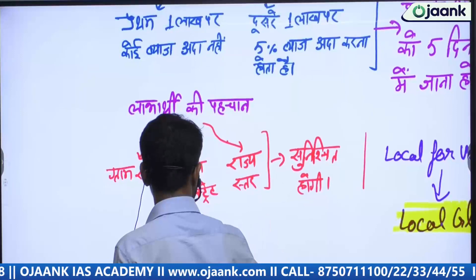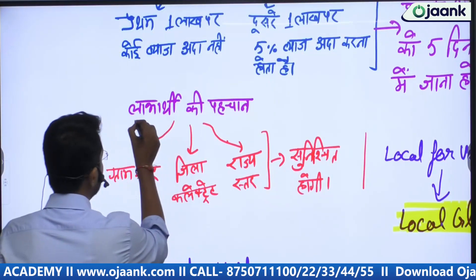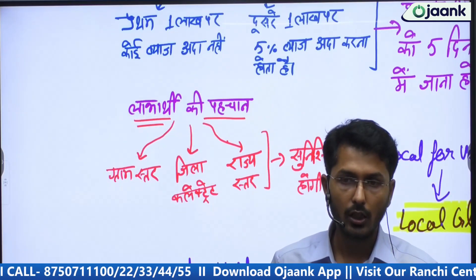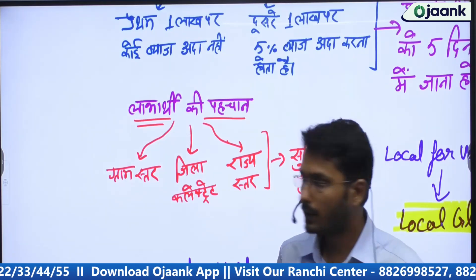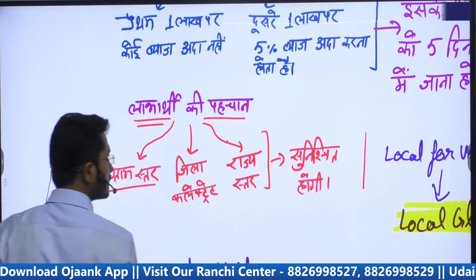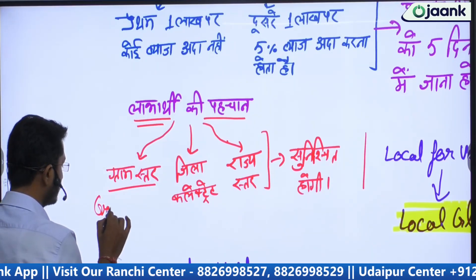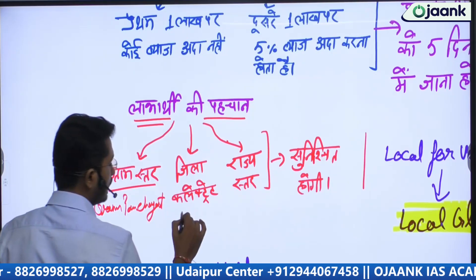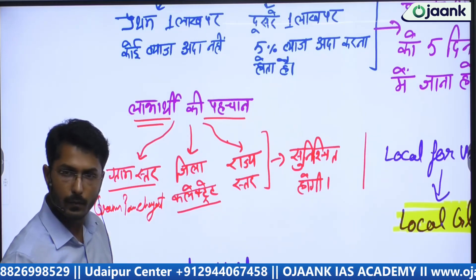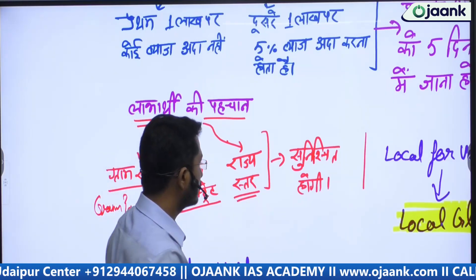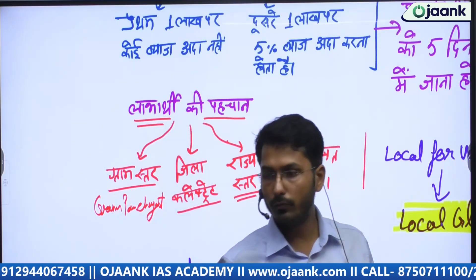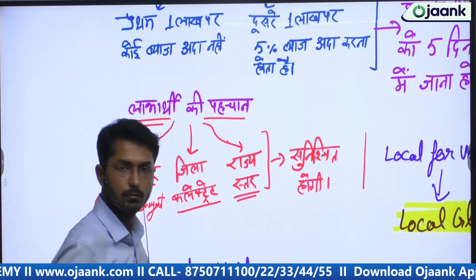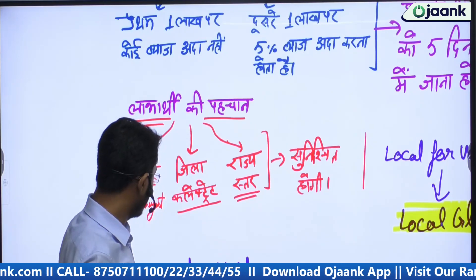Then, the identification of the beneficiary — note this point — the identification of who the beneficiary is will happen at three levels: one at the Gram Panchayat level, one at the District Collectorate level, and one at the State level. The identification of which person is eligible for this scheme and should receive its benefit is done through these three levels.